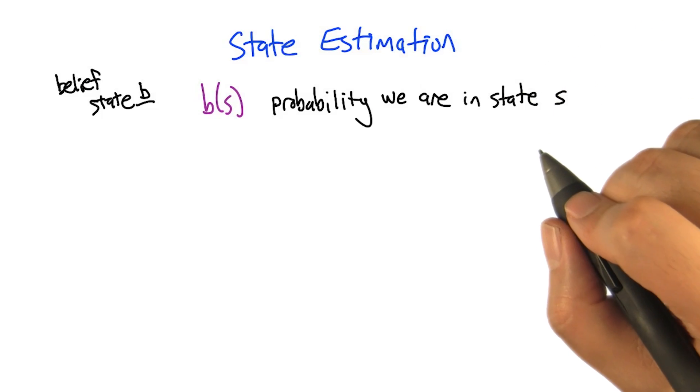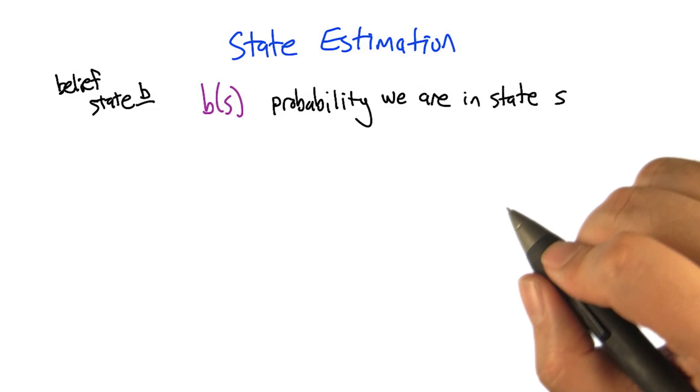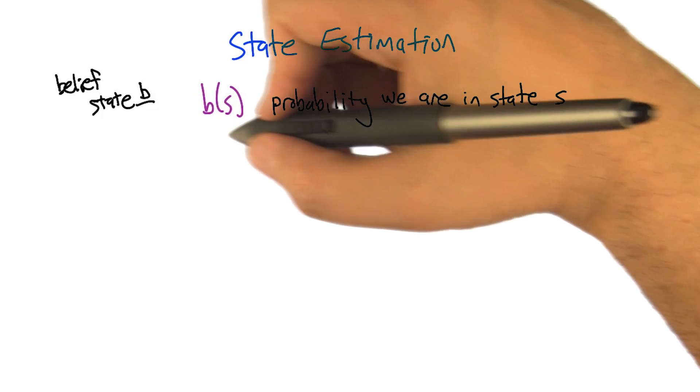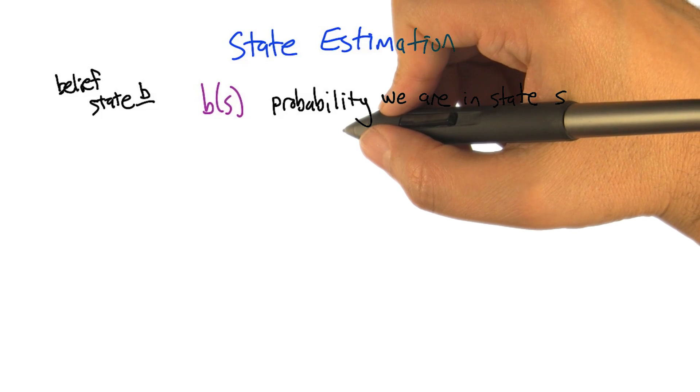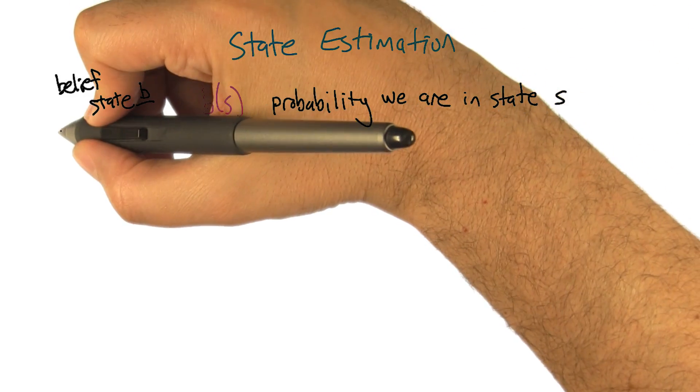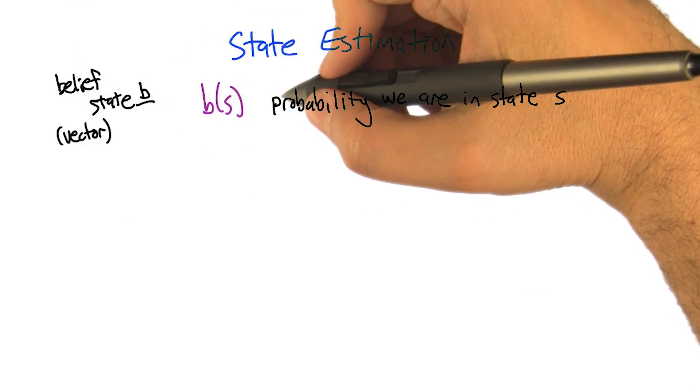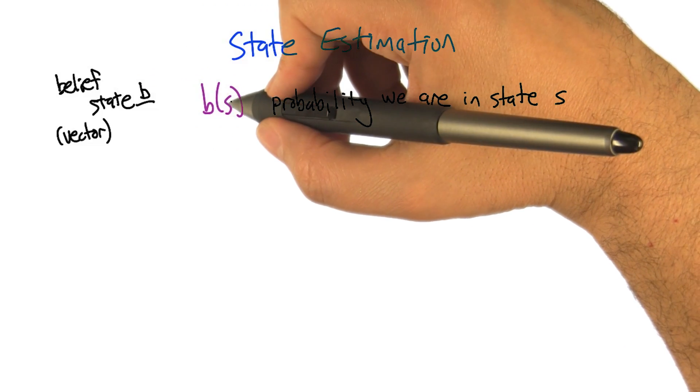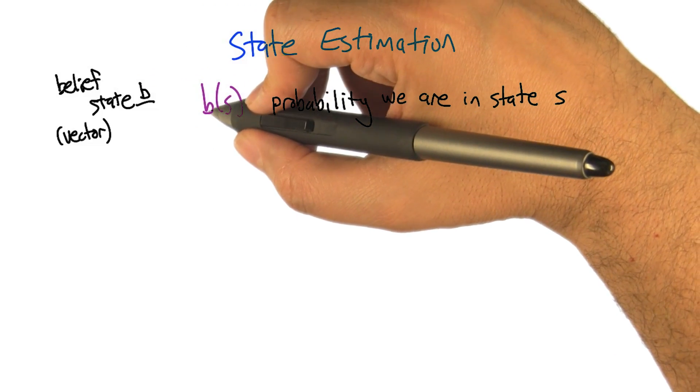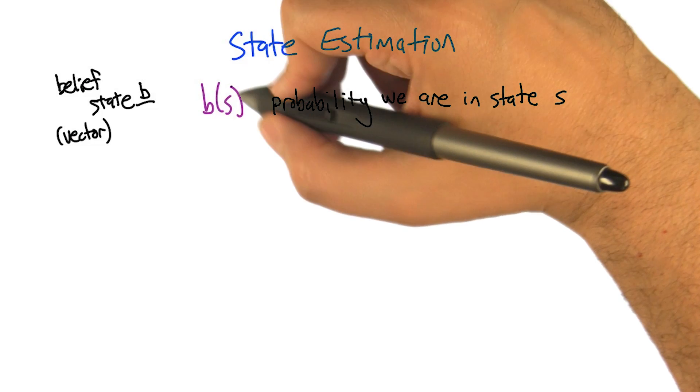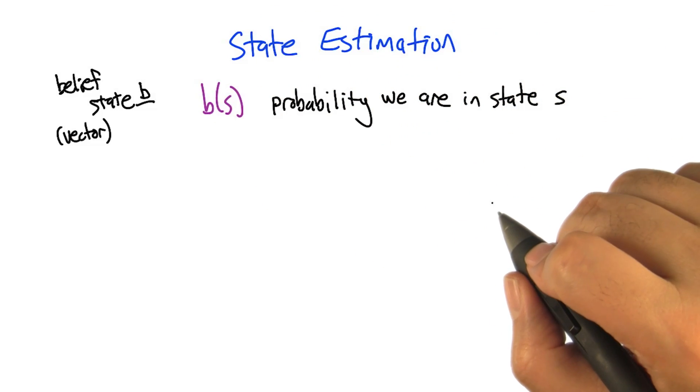So b is like a state, well it's a belief state. So it's like what we did in the last example, it's kind of a vector, it's a distribution over states. Yes, exactly, it's a probability distribution over states. And that's going to encode for us, it's going to retain for us the information about the history that might be important for decision making.